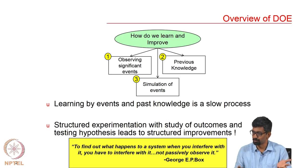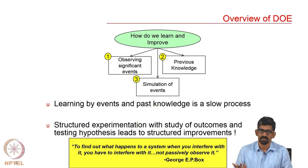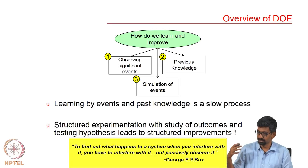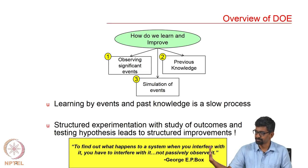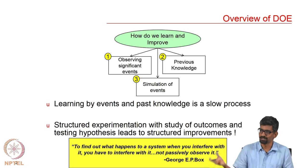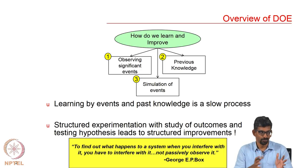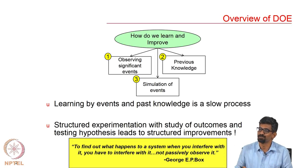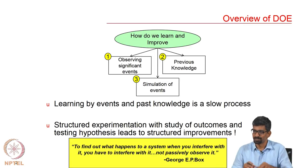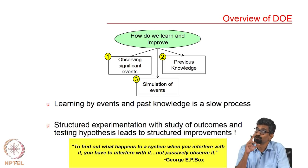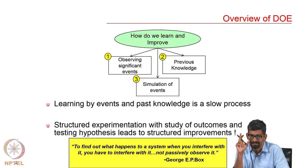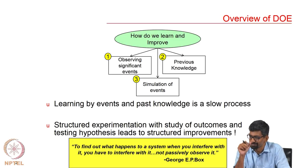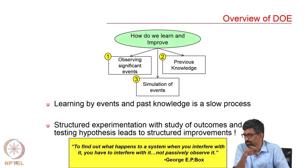Learning by events and past knowledge is a slow process, and people are still struggling to understand how to transfer knowledge. Even in a systematic institute like ours, staff usually stay at a place for 3 to 4 years and then move to another department. We have this issue of transferring their knowledge to the next person — that is when workflow comes into the picture. It is not person-dependent anymore; everything is recorded.